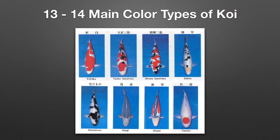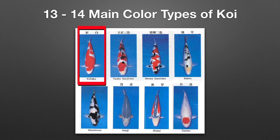Currently, about 13–14 main color types of koi are known. In this picture you can see about eight of them. The most popular color type of koi is kohaku. Since koi originated in Japan, all koi terminology is Japanese — advanced koi hobbyists and koi producers know this terminology. The most popular color type, kohaku, is a white fish with red patches, which you can see in the upper left photo.